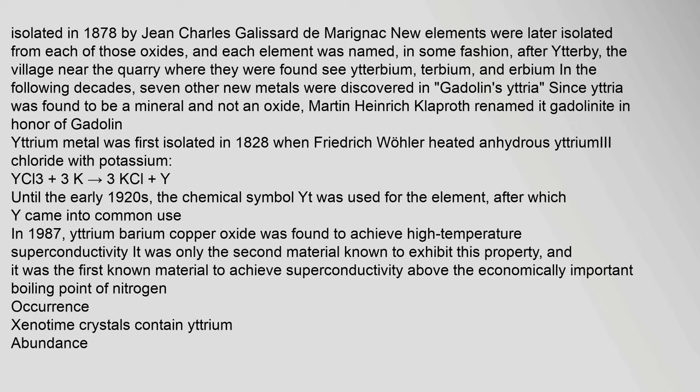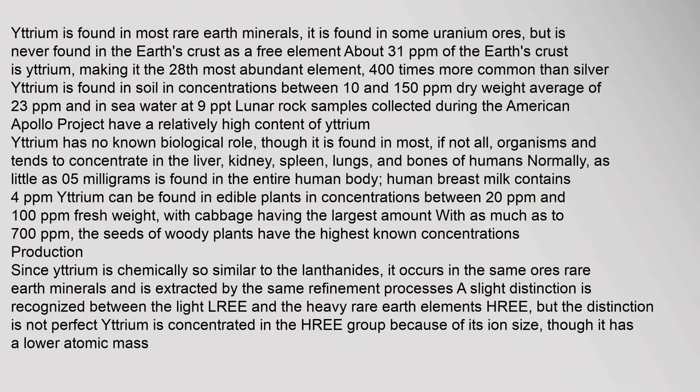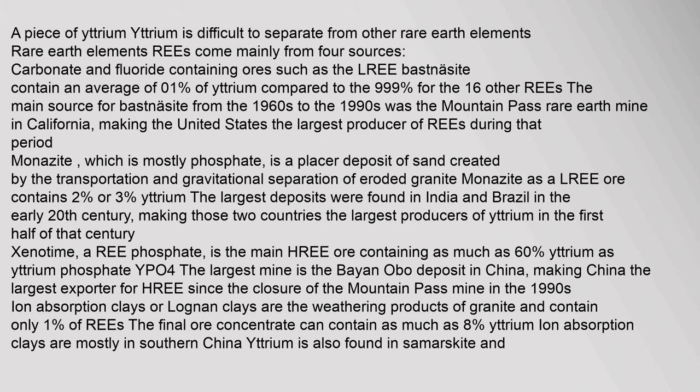Yttrium is found in most rare earth minerals; it is found in some uranium ores, but is never found in the earth's crust as a free element. Yttrium is difficult to separate from other rare earth elements. Rare earth elements come mainly from four sources. Carbonate and fluoride containing ores such as LREE bastnäsite contain an average of 0.1% of yttrium compared to 99.9% for the 16 other rare earth elements. The main source for bastnäsite from the 1960s to the 1990s was the Mountain Pass rare earth mine in California, making the United States the largest producer of rare earths during that period.